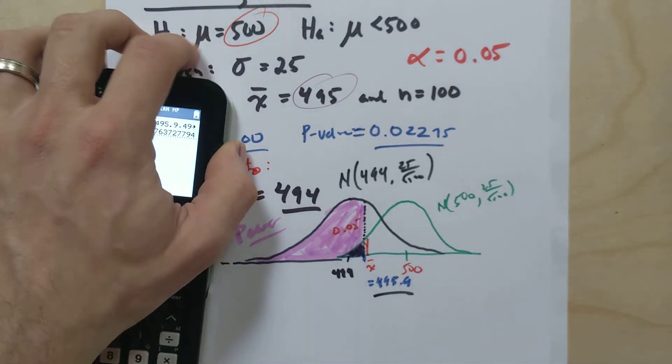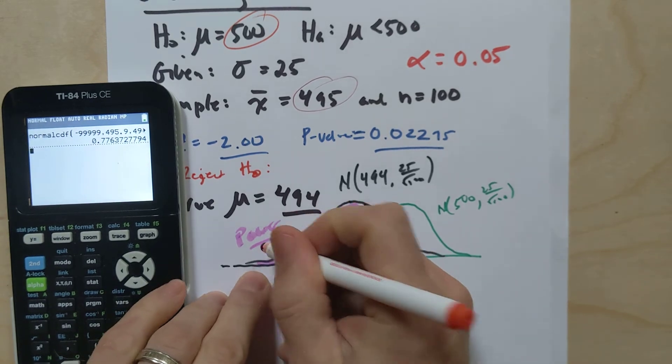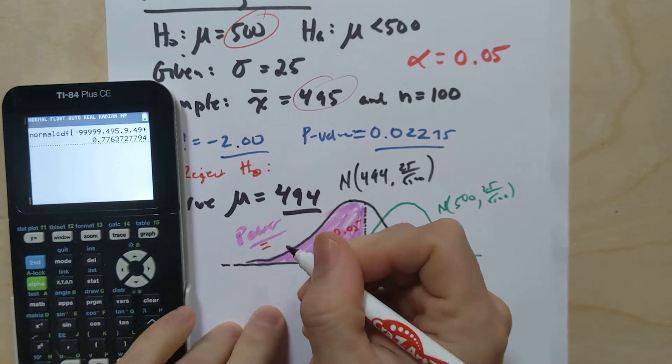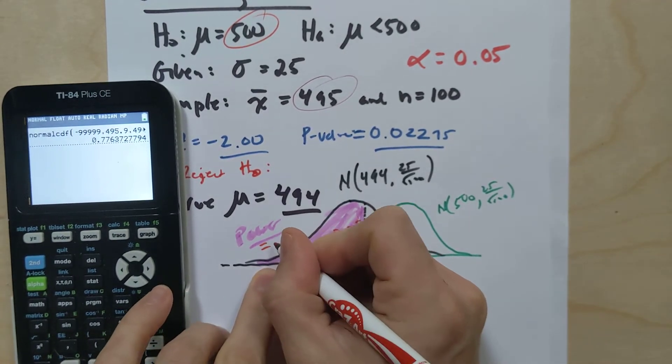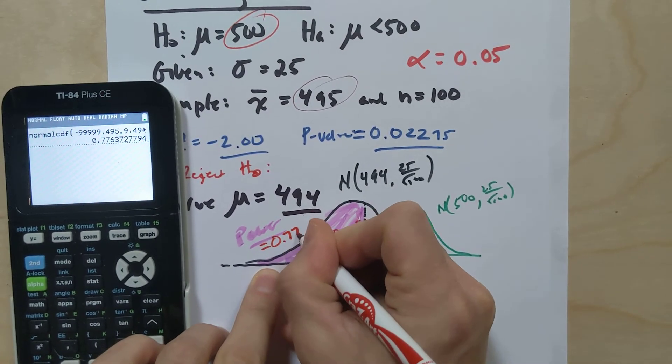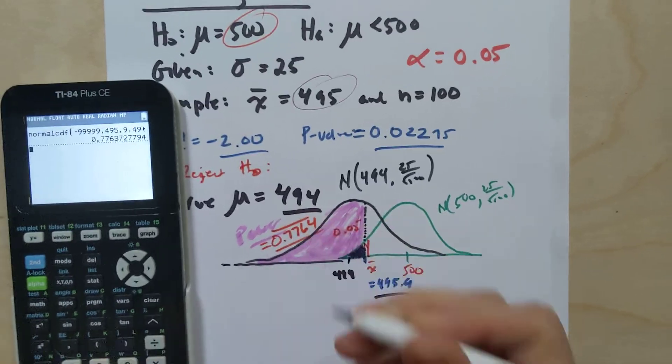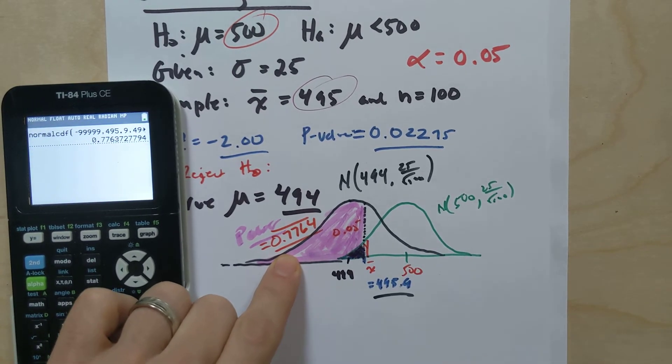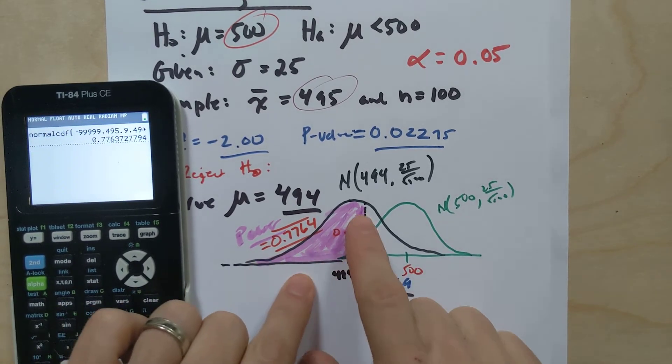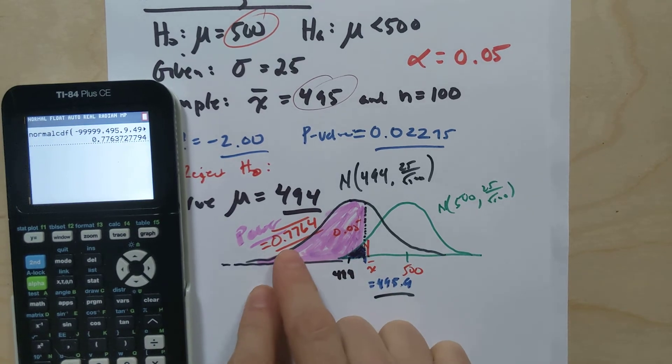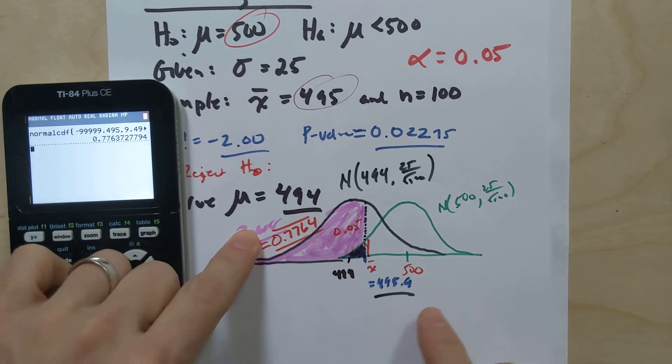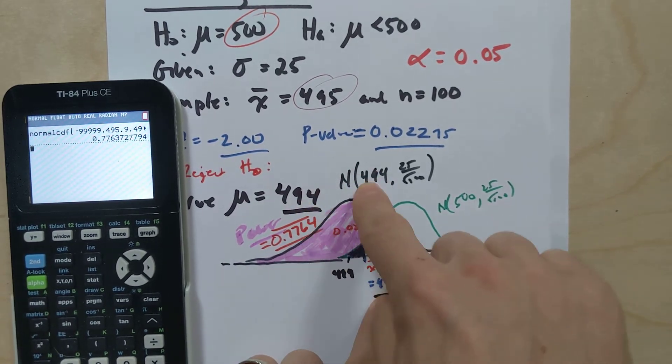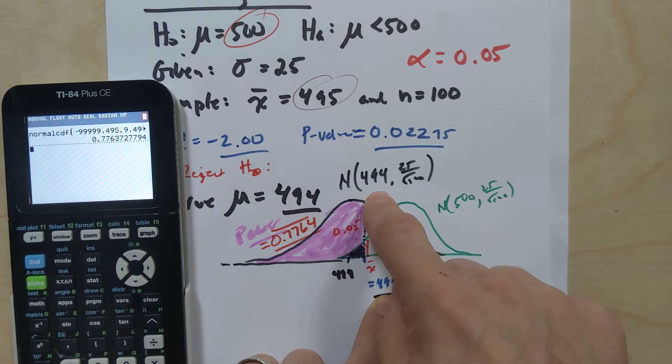Ooh, look at that. Lookie-loo. The power of this test was about 0.7764, right? 77.64% chance that I would choose to reject the null hypothesis in this particular instance. Why? Because there was a 77.64% chance that I would get a sample mean that was below 495.9 for the true distribution that was based on 494, right?